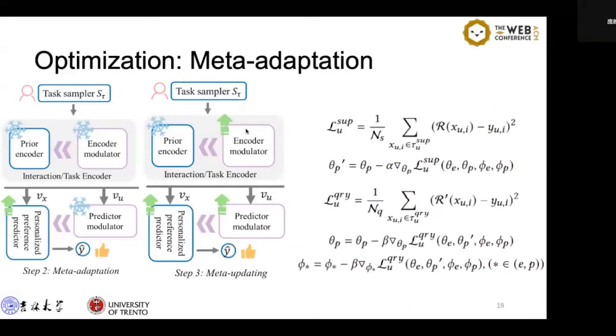We compute the loss on the support set and update the parameters for the predictor. Then we compute the loss on the query set. The update of the predictor parameters is based on the initial meta-model. The loss is calculated based on the model after adaptation, but the gradient is calculated based on the meta-model parameters and used to update the meta-model.